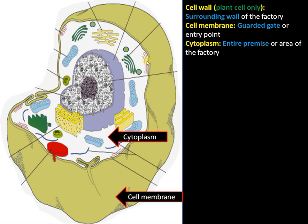Next is the cytoplasm, which can be considered as the entire premise or area of the factory where all the activities take place. In the cell, cytoplasm is the region where all the organelles are present.